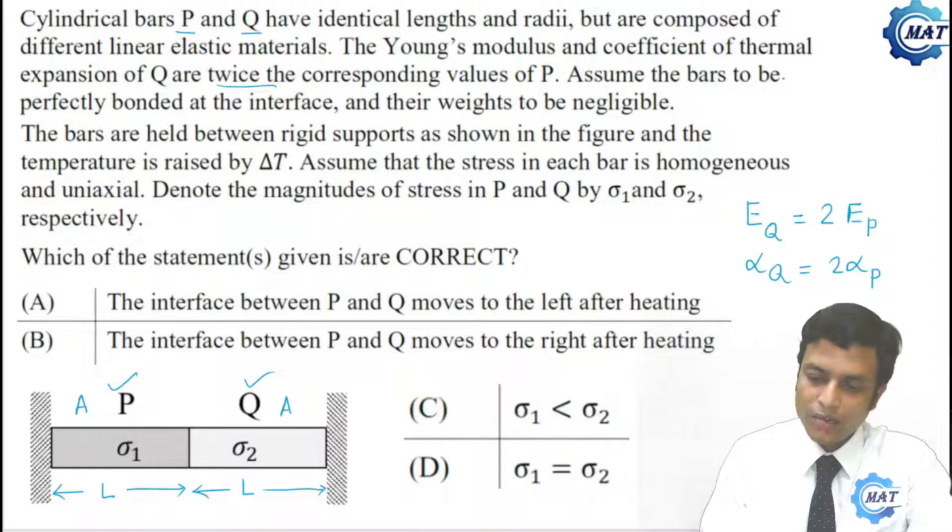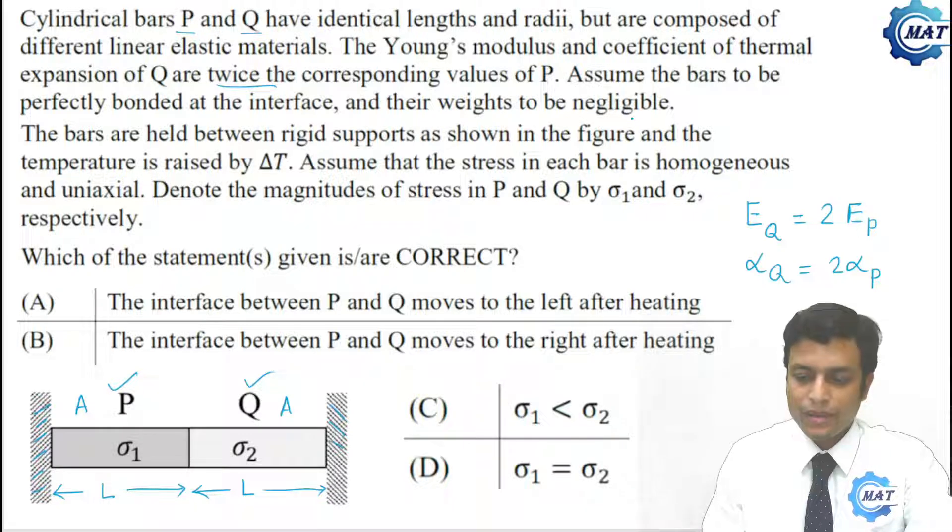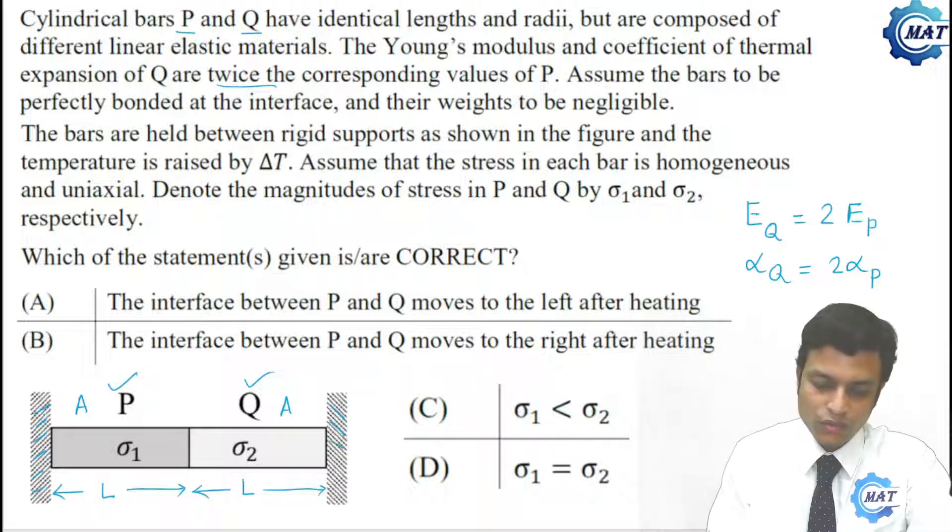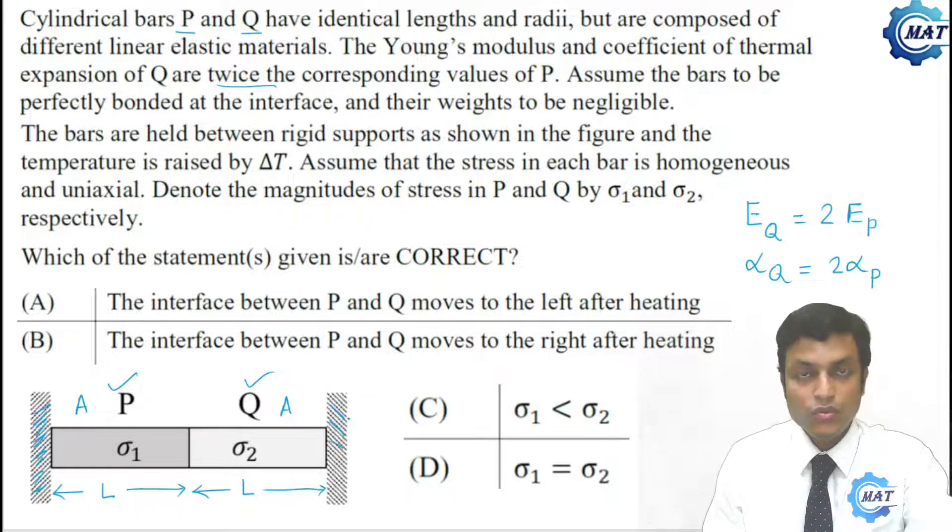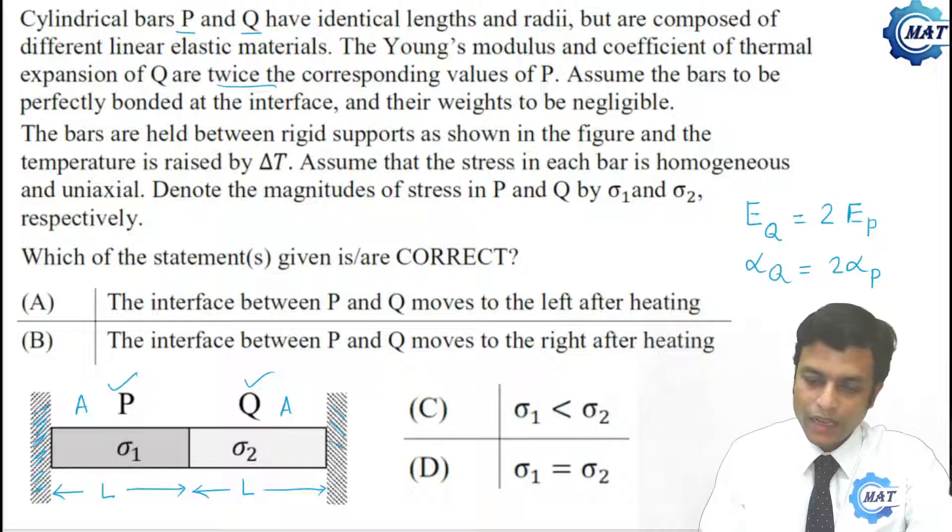Assume the bars to be perfectly bonded at interface. So these are two interfaces perfectly bonded. And weights to be negligible, bars have negligible weight. The bars are held between rigid supports, these are two rigid supports. So rigid supports do not allow the bars to elongate, as shown in the figure.